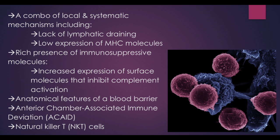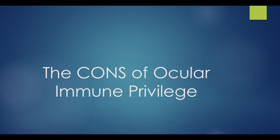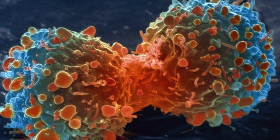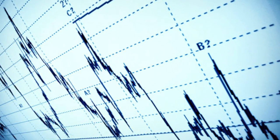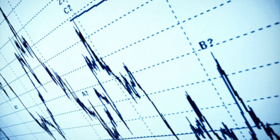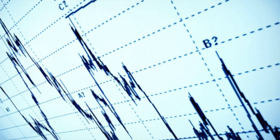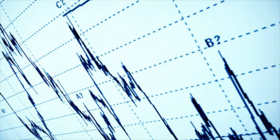Even though ocular immune privilege sounds fantastic, it does have some cons. First, ocular immune privilege and other tumor-related immune privilege can combine to permit extensive tumor growth and increase the risk of metastasis, threatening the survival of the individual or host. Second, ocular immune privilege is a volatile characteristic of the eye — it can protect the eye under necessary conditions, but its absence can cause irreparable damage to eye tissue.